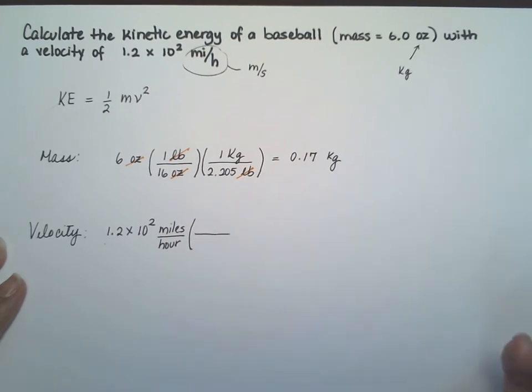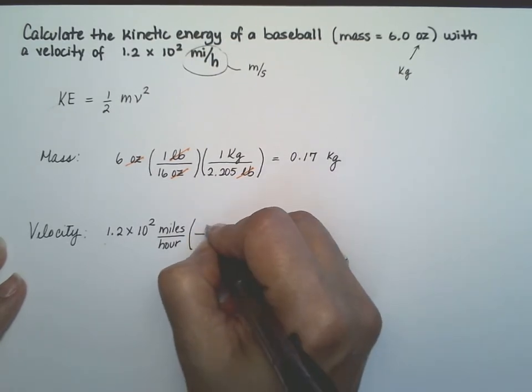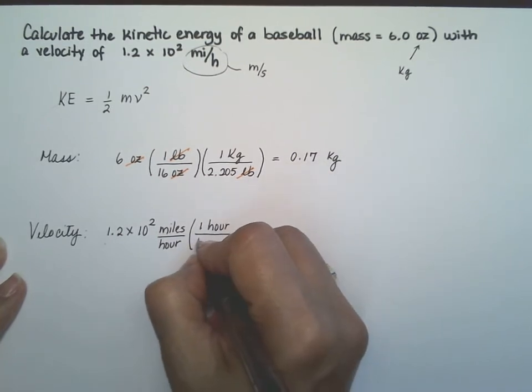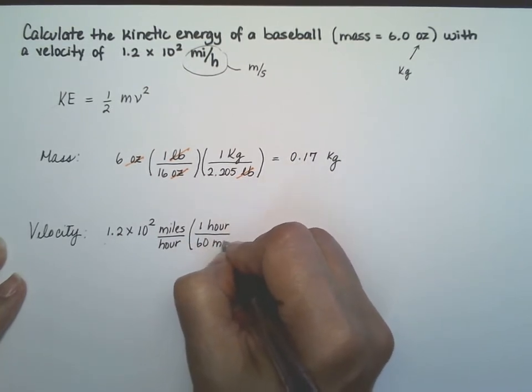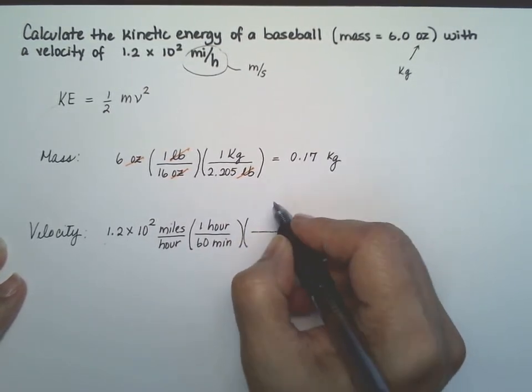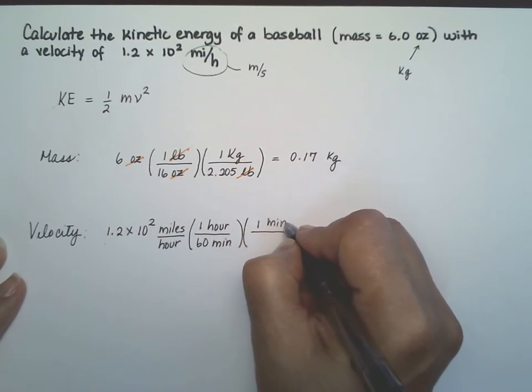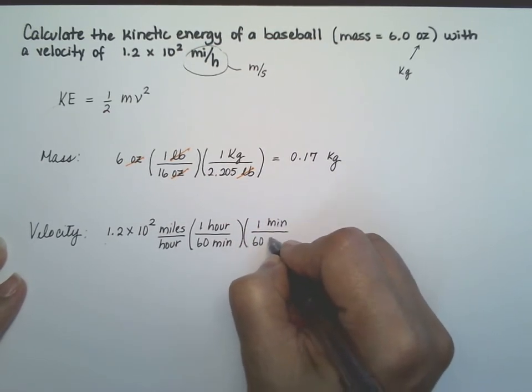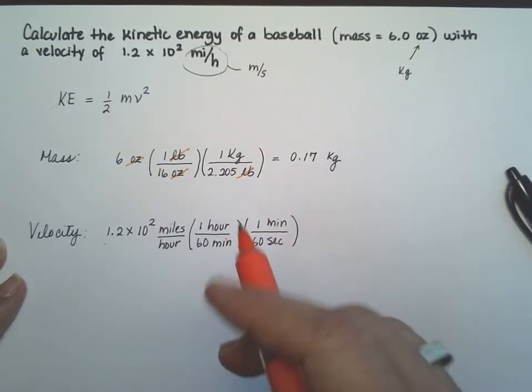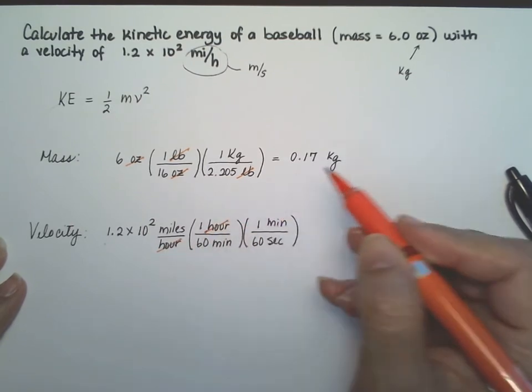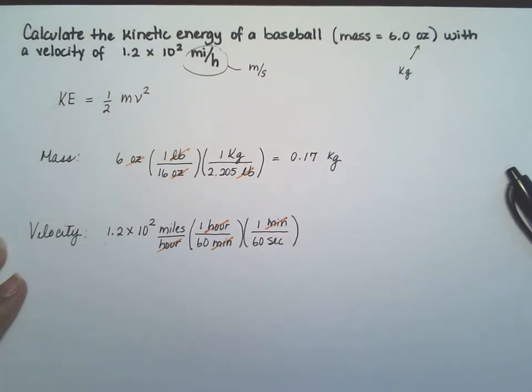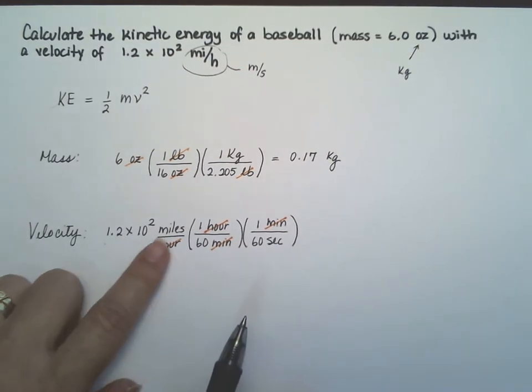Let's start with the hours first because that's actually the easiest one. So we know that in one hour, we have 60 minutes. And we know that one minute is 60 seconds. So let's see if we were able to convert our hours to seconds. So hours cancel, minutes cancel, and I'm left with seconds there. Now I need to change the miles.